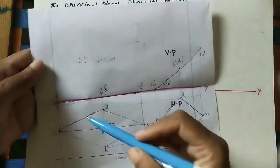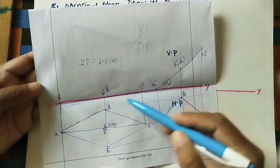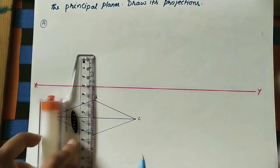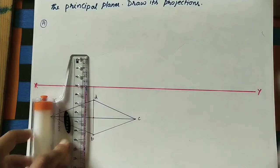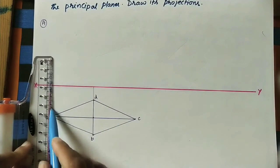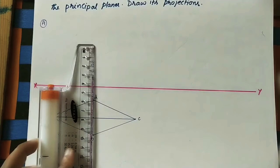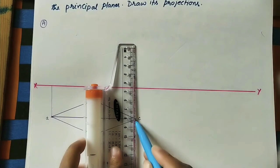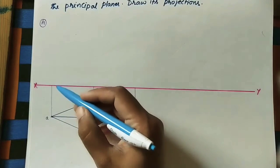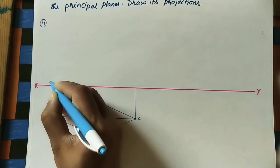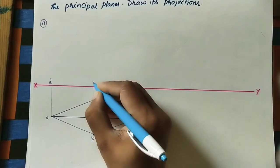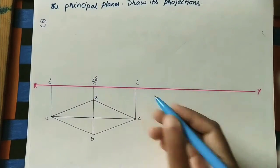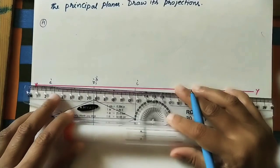This is the top view. Do projector lines at all the points for the front view. This is the reference line. In the front view, mark A-dash, B-dash, D-dash (they coincide), and C-dash. Make the front view dark.